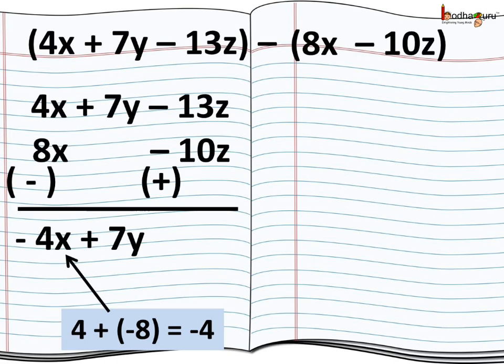Next, 7y doesn't have any like term in the second expression. So, it would remain the same. And thus, we get plus 7y.